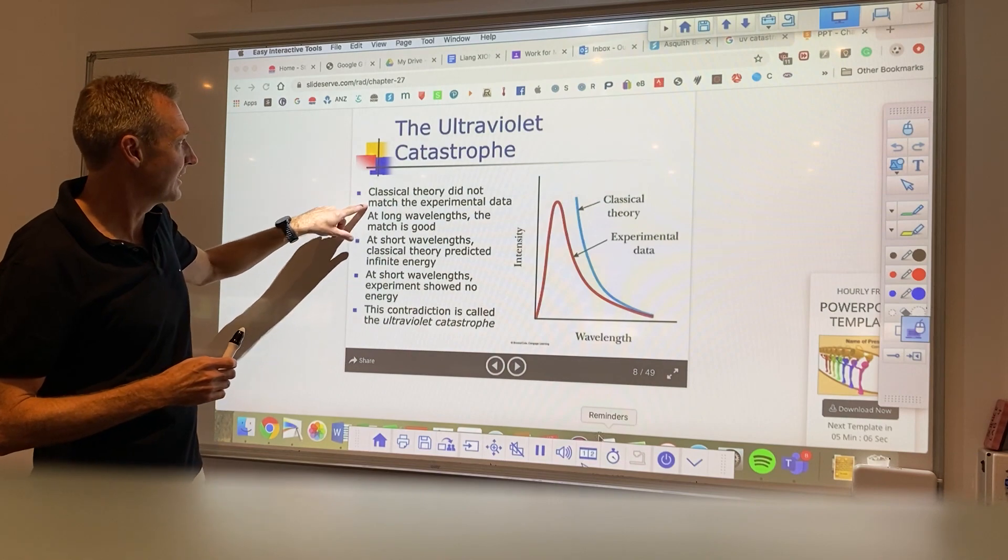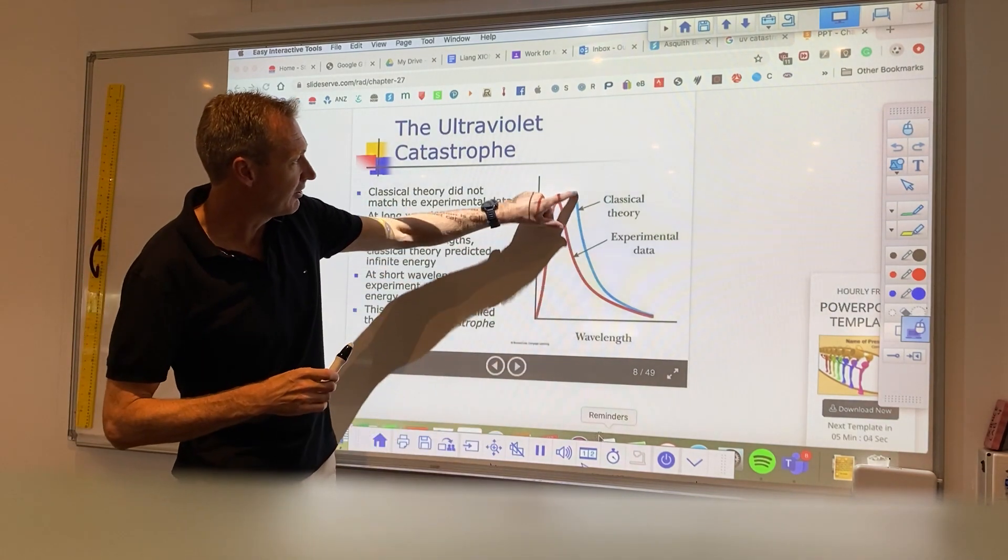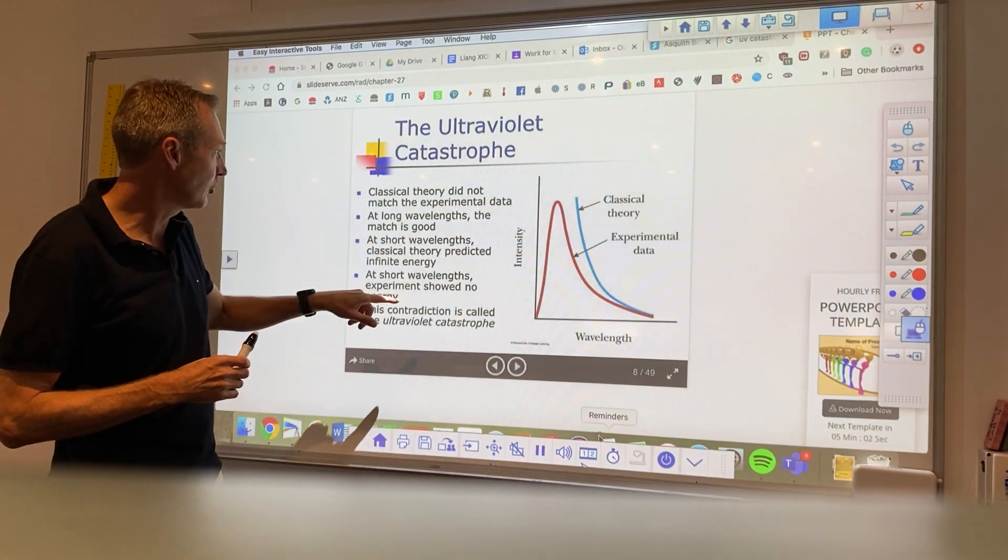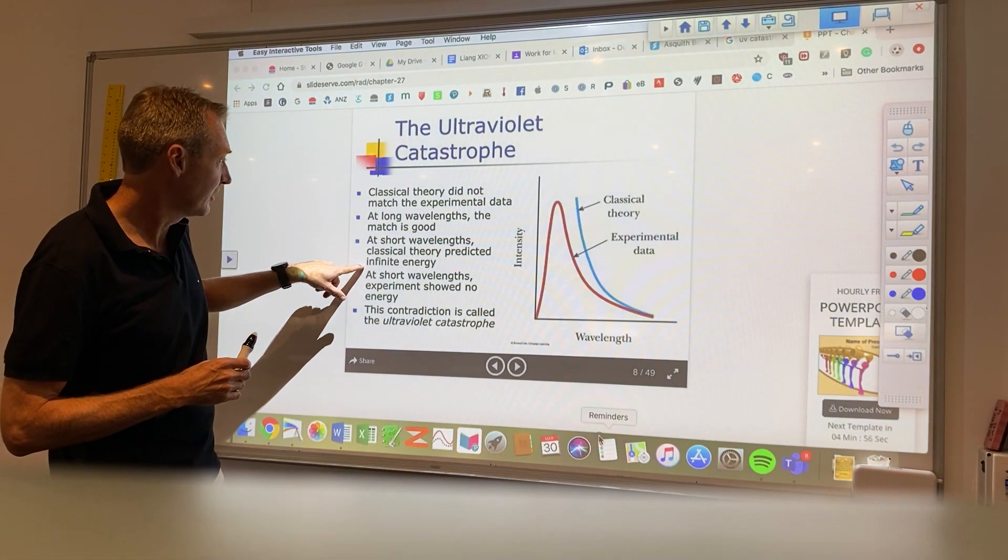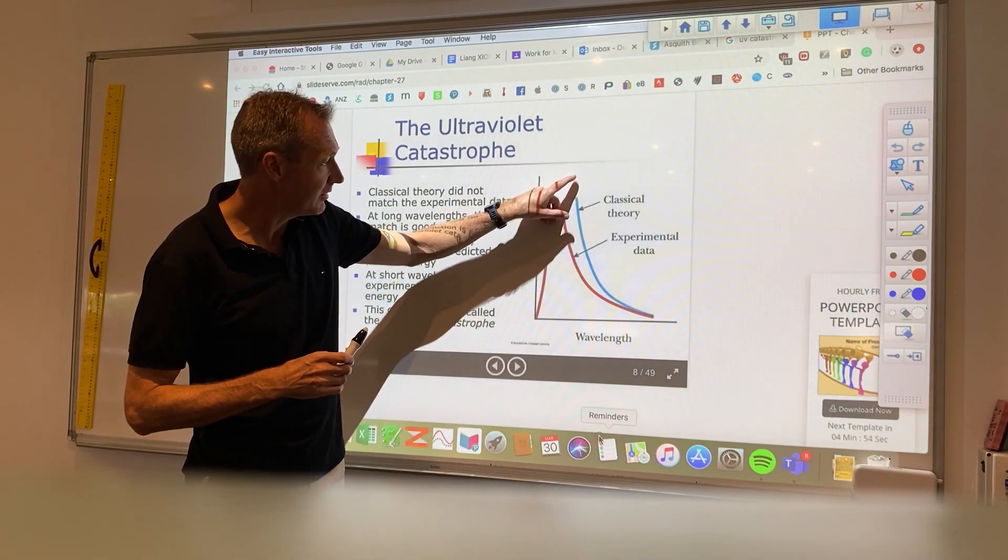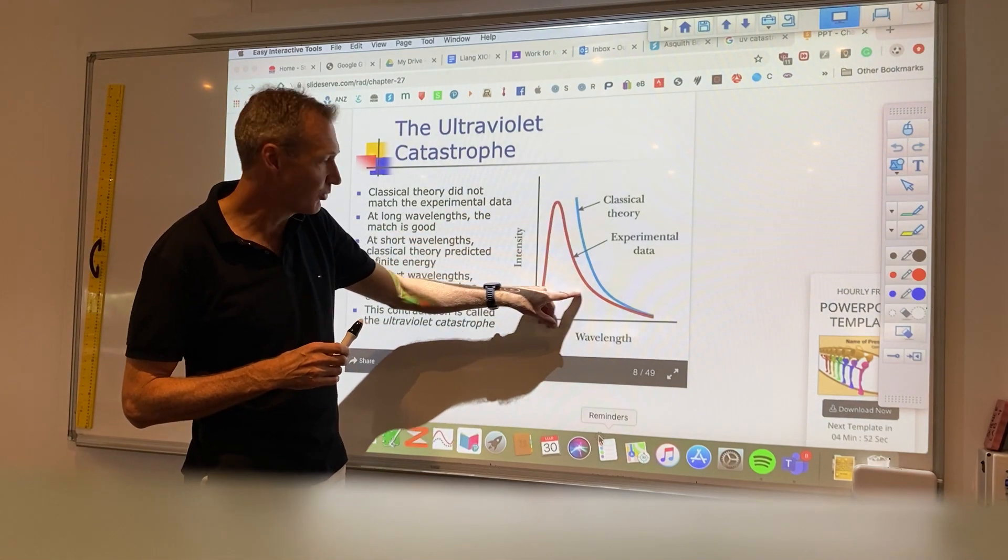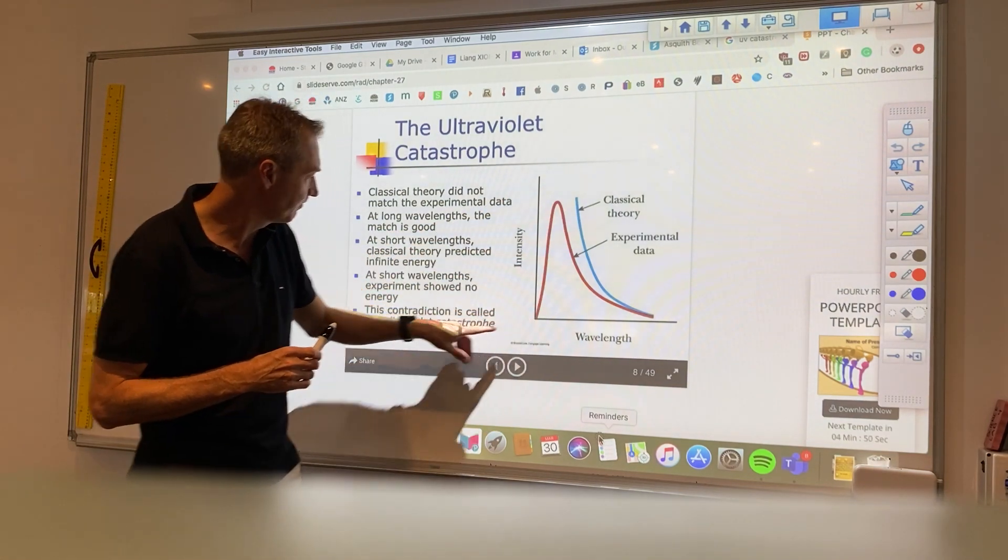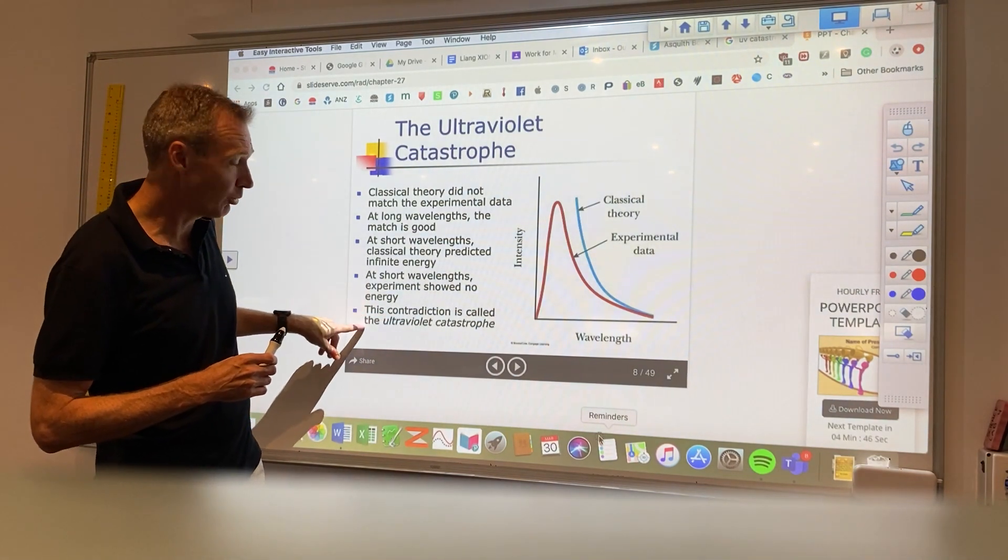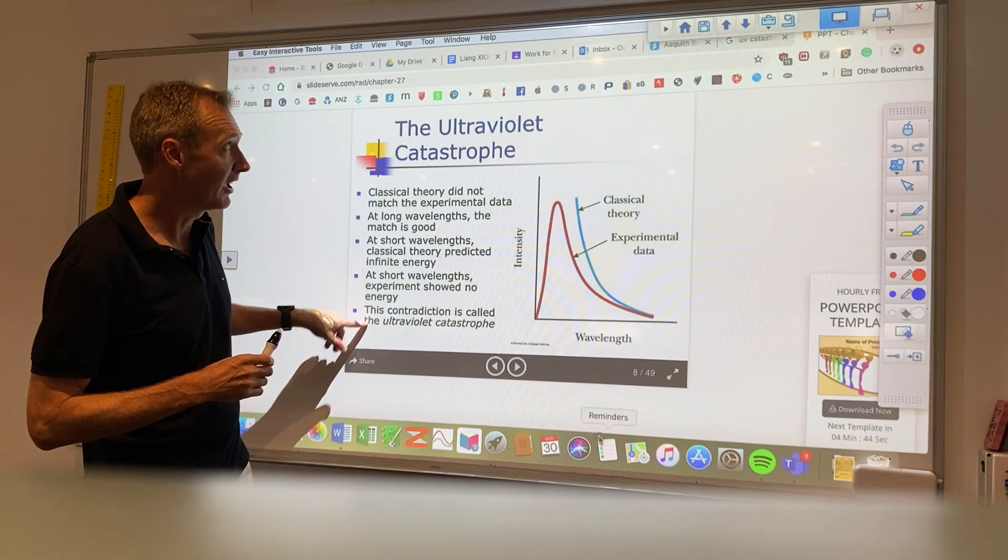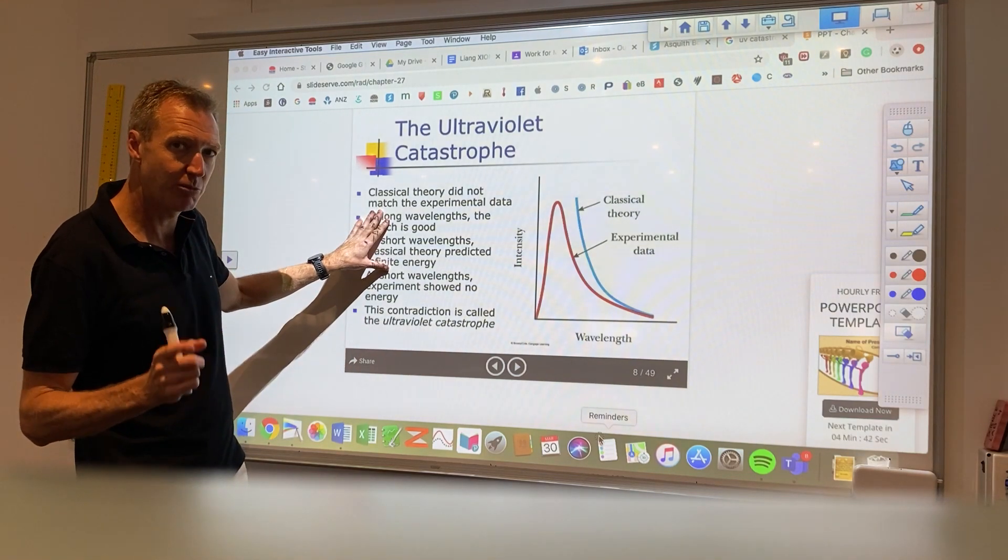You can see there that because the classical theory didn't match the experimental data, there had to be something else happening. So at shorter wavelengths, it predicted infinite energy, but of course this wasn't happening. It was dropping back. So this contradiction they called the ultraviolet catastrophe, and I'm going to explain it using the Bohr model.